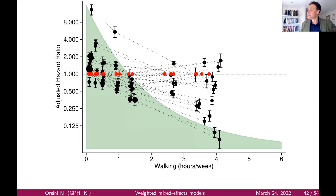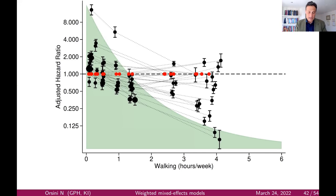If you have randomized trials, you may have the baseline rate. But in observational studies with confounders, typically you only have the adjusted treatment effect — that is the only thing available.